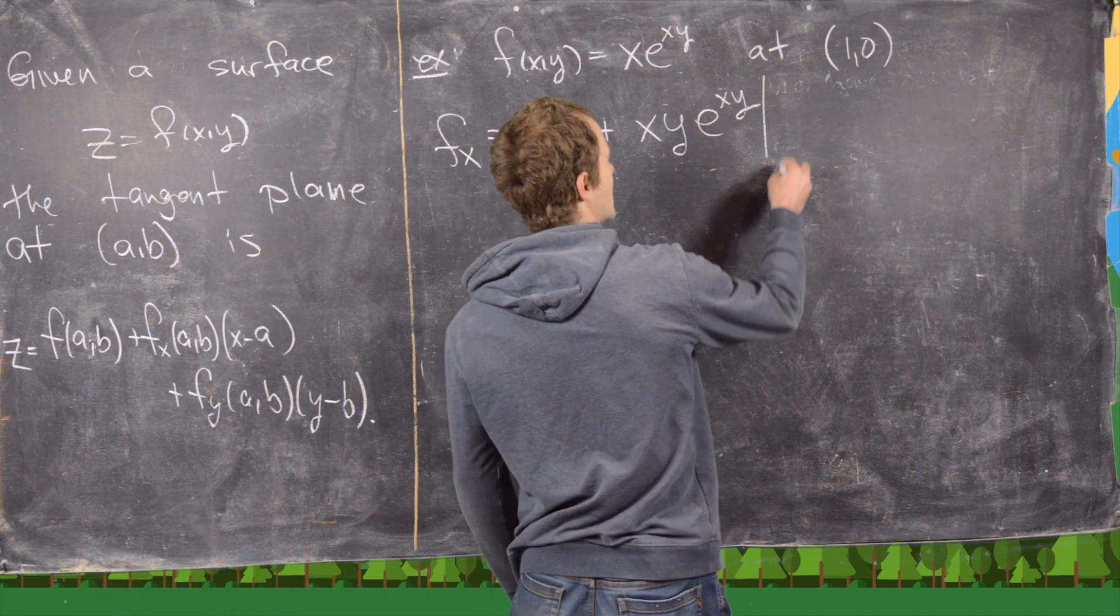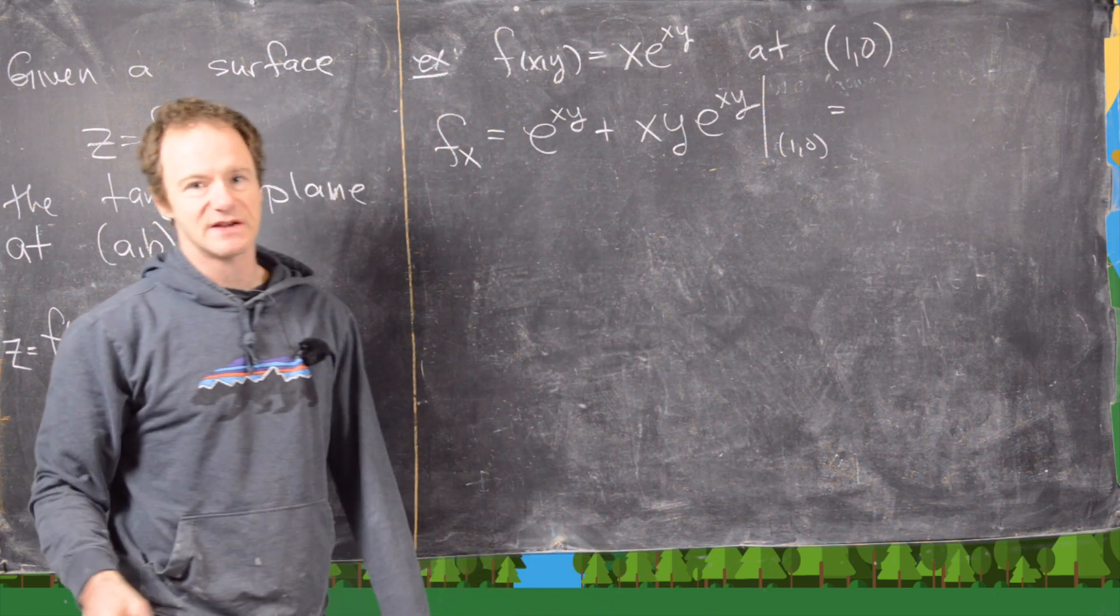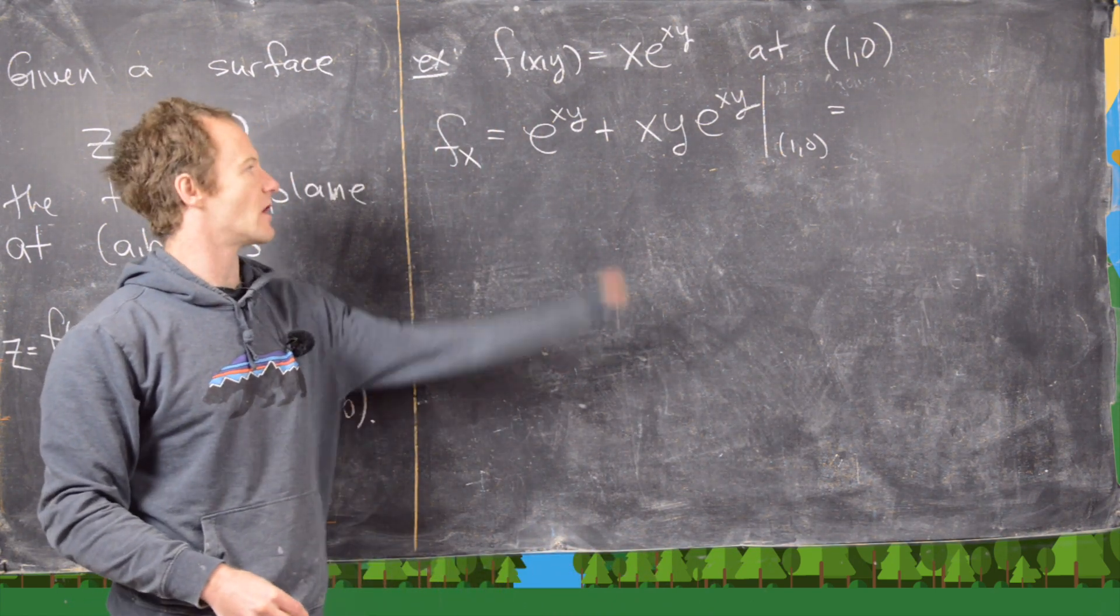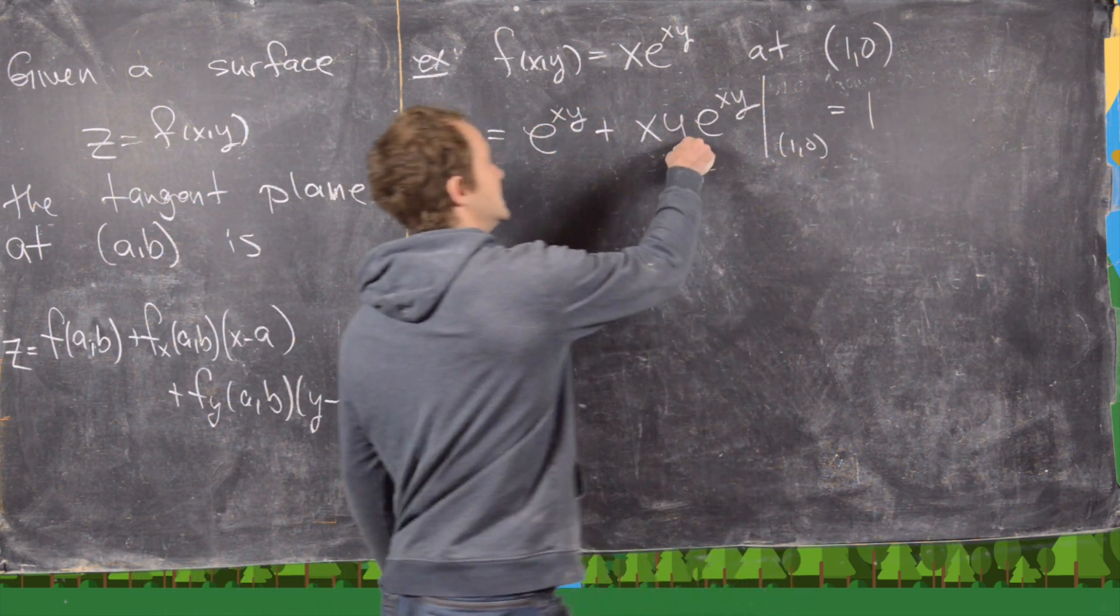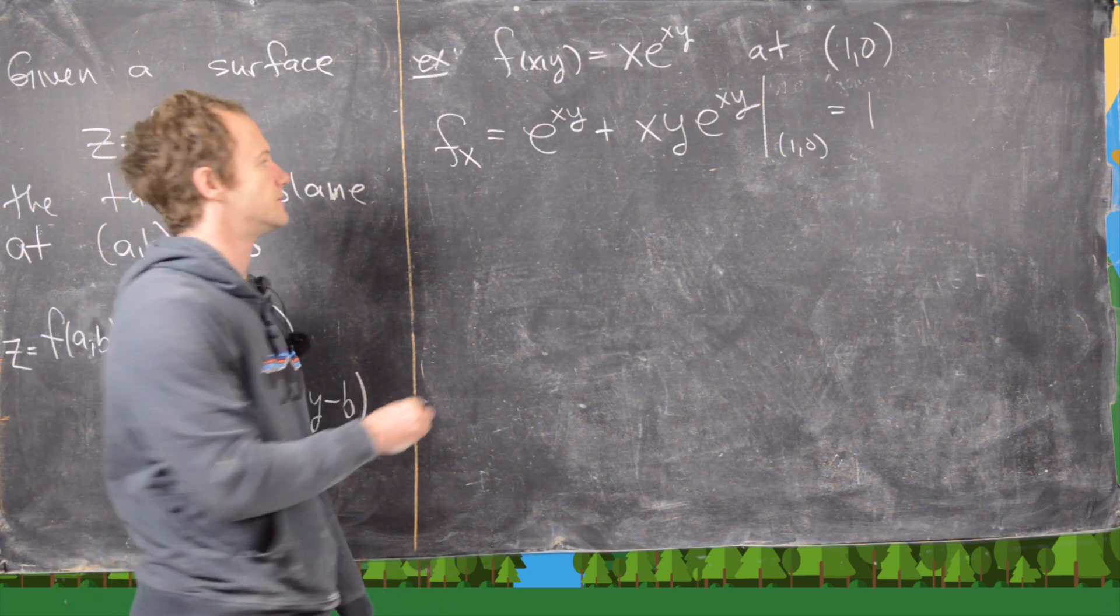Now we need to evaluate that at the point (1,0). Let's see what we get when we do that. We'll plug in x equals 1, y equals 0. We get e to the 0, which is 1, plus 0 because we have this y·0 term there, so that's just 1.